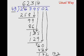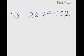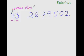Our quotient is 62,314. Now let's see the faster way to divide. You will get the answer in maximum one or two lines. To divide the faster way, break the divisor 43 into two manageable numbers: 4 as the main divisor and 3 as the unused digit.